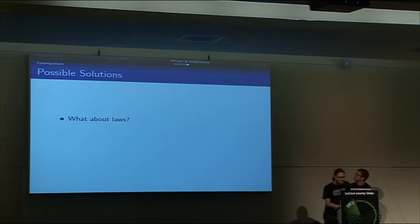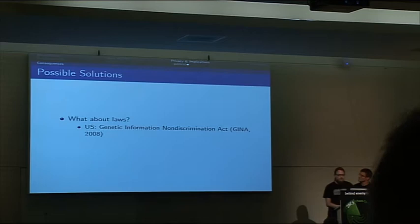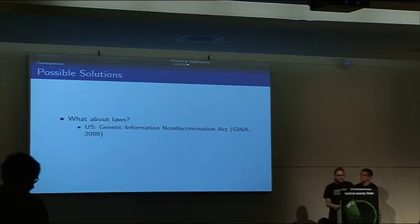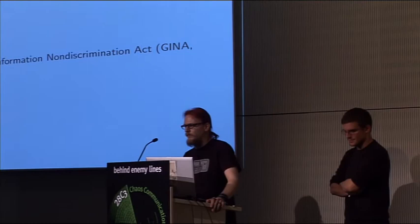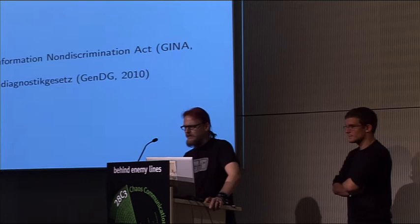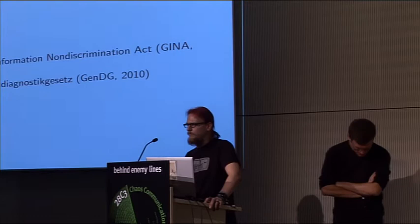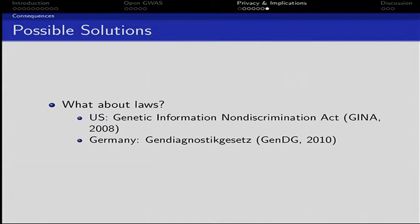What about laws? There are already some laws in place to minimize the impact of public genetic information. In the United States, the Genetic Information Non-Discrimination Act (GINA) is aimed mainly at insurance companies and future employers — it says they may not discriminate based on genetic information. However, this is only for basic health insurance; life insurance could still be denied. Here in Germany, the Gendiagnostikgesetz makes direct-to-consumer genetic testing not entirely legal, though people can still get tested.